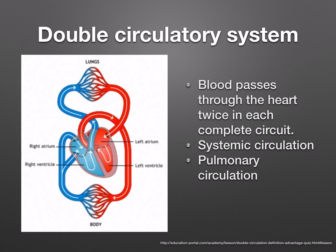Here you can see the pathway of blood as it goes through the different parts of the heart. The advantage of a double circulatory system is that it keeps the oxygenated blood — represented by the red in this diagram — and the deoxygenated blood — represented by the blue — separate. It also allows for high pressure in the systemic circuit.